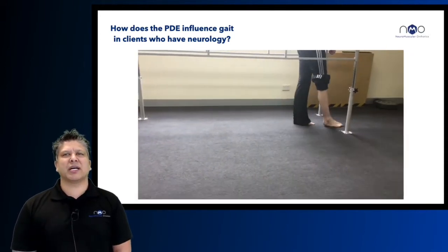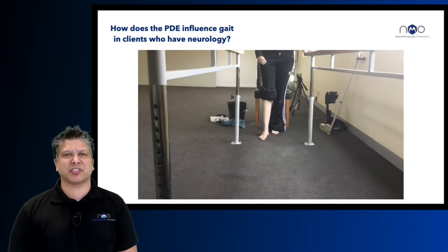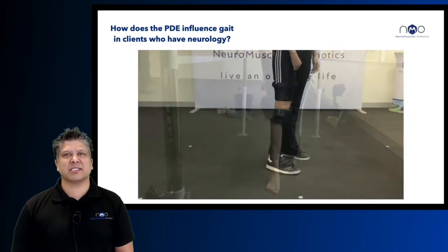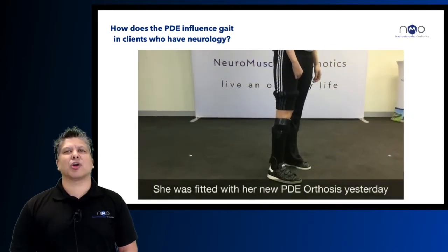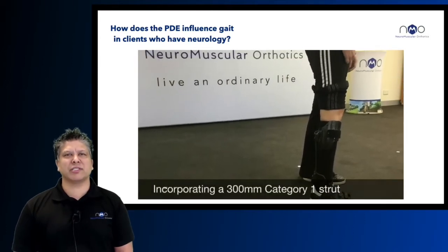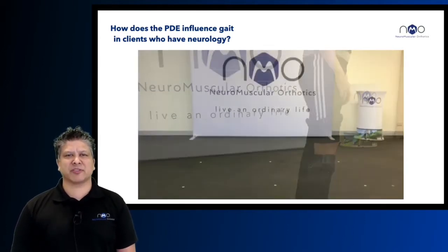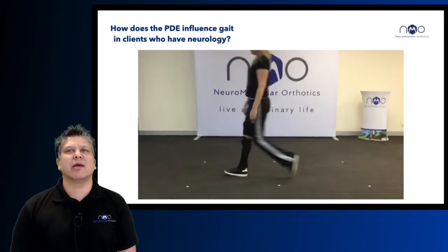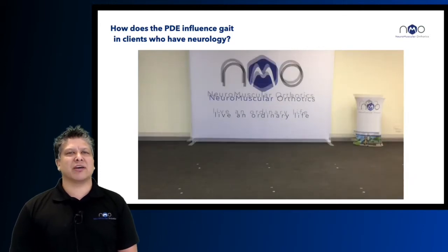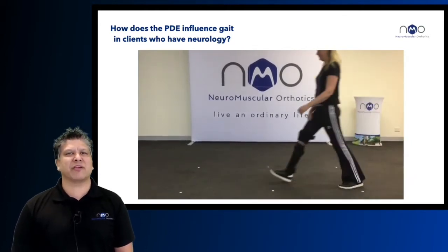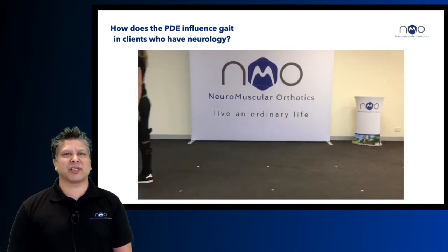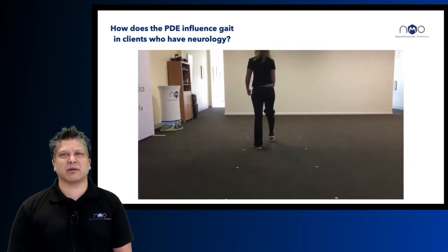Amelia is a young Australian lady who suffered a very severe stroke in 2014. She has muscle weakness but spasticity is masking a lot of that weakness in the limb. She was fitted with a below-knee PDE orthosis and her preferred spring is a category one in the 300 millimeter length, which allows optimal ankle plantar flexion in loading response while allowing controlled dorsiflexion without setting off her spastic gastroc reflex.